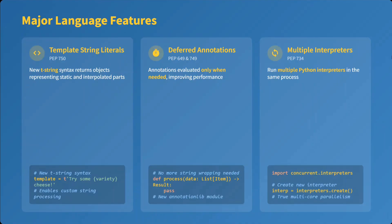Deferred annotations are now evaluated only when needed, improving performance — unless they are required, they won't be evaluated. Apart from that, multiple interpreters can run in the same process, providing true multi-core parallelism.